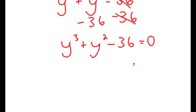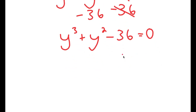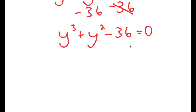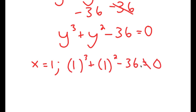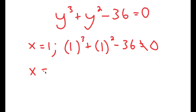To solve equations like these, we have to first find one solution and then use that to find the remaining solutions. The only way to find that first solution is to just plug in values and see if they work. Plugging in y equals 1, we get 1 to the power of 3 plus 1 squared minus 36, which is 2 minus 36, which does not equal 0.